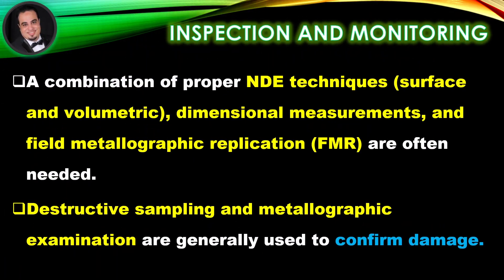Inspection and monitoring: Creep deformation and the associated microvoid formation, fissuring, and dimensional change are not effectively found by any one inspection technique. A combination of proper NDE techniques — surface and volumetric — dimensional measurements, and field metallographic replication are often needed. Destructive sampling and metallographic examination are generally used to confirm damage.